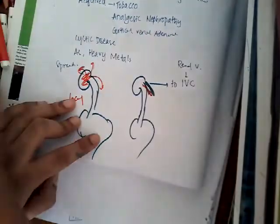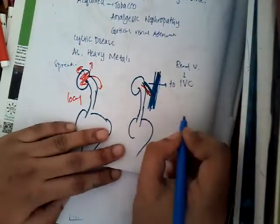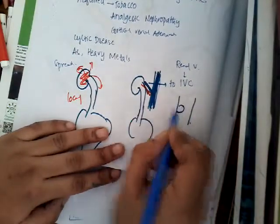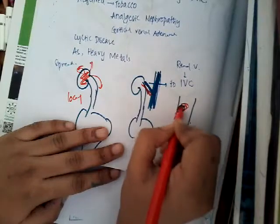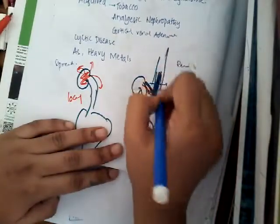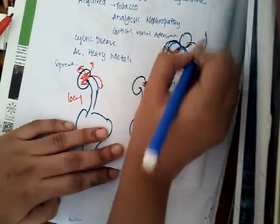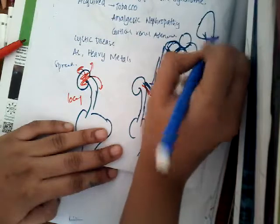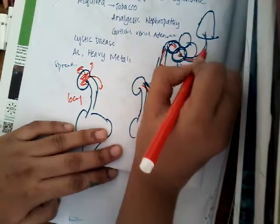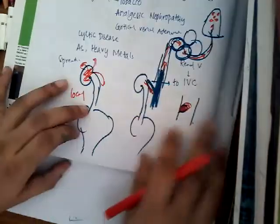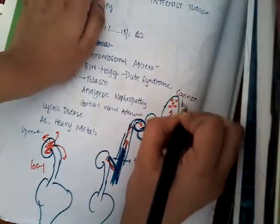From the renal vein, it spreads to the inferior vena cava. In the inferior vena cava, the tumor gets attached to the wall and forms secondaries. From the inferior vena cava, it can go to the right heart — right atrium, right ventricle — and from the right ventricle it can go to the lungs. The tumor thrombus can travel this path and form cannonball secondaries in the lungs. It can also cause secondaries in long bones.